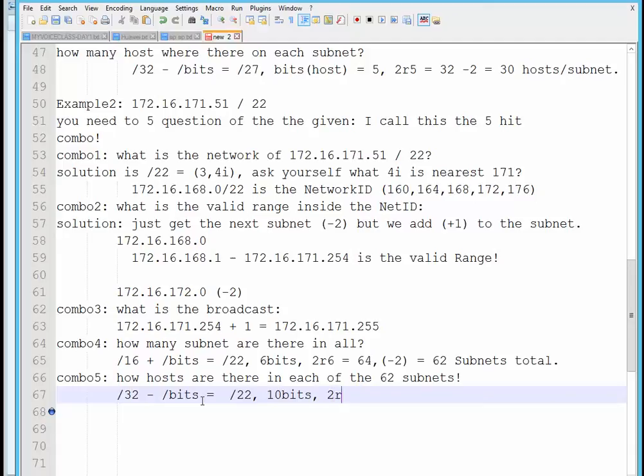So moving on. Two raised to 10. We all know that is 1024. We need to subtract two for the all ones and all zeros, giving you a total of 1022 hosts per subnet.